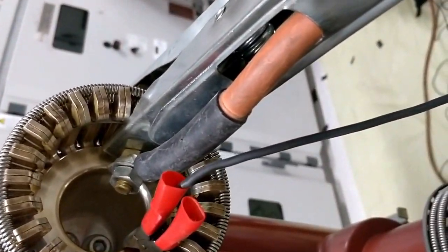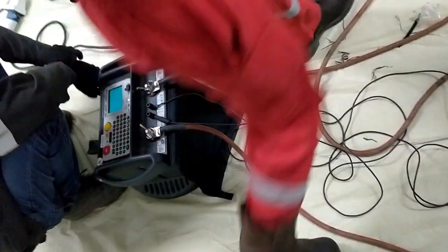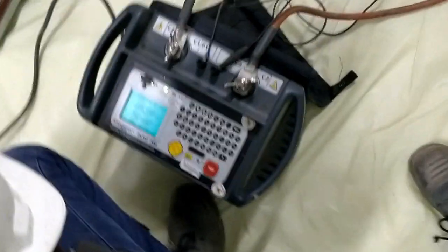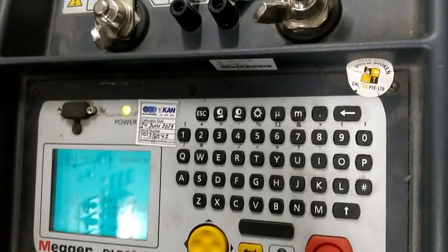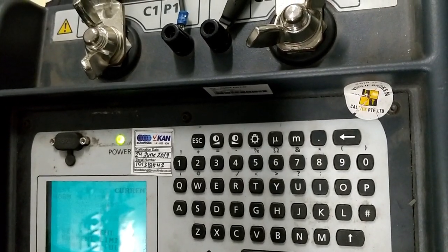Connect the current cable to the R phase from the in and out of the breaker and connect the voltage lead towards the current. Now I am going to start the contact resistance test in normal mode.